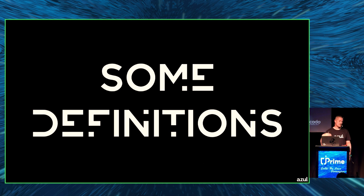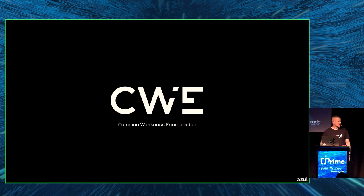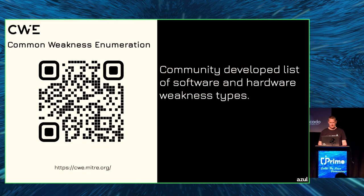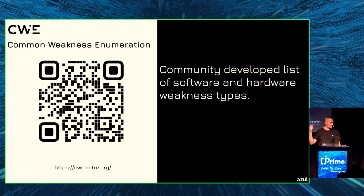When I stumbled upon the Log4Shell stuff, there were so many acronyms — the Americans are really good at creating acronyms — and I had no idea what they meant. So I looked them up. First, there's CWE, Common Weakness Enumeration. It's a community-developed list of software and hardware weakness types, available at cwe.mitre.org. The slides will be made available afterwards, and I have QR codes with links. When you find a vulnerability, you'll often find a CWE number.